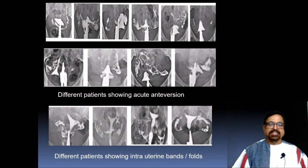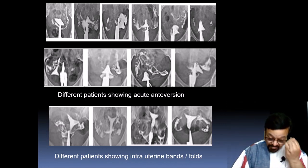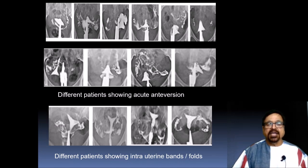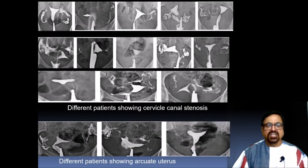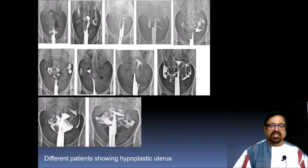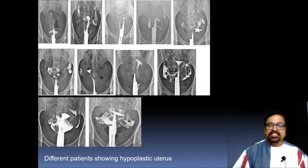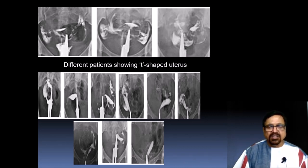We are now going to a film reading session — all images are from our own research paper. The first group shows different patients with acute anteversion. The second group shows different patients with intrauterine bands, adhesions, folds, or synechiae. Then different patients showing bicornuate uterus, different patients showing cervical canal stenosis, different patients showing arcuate uterus, different patients showing hypoplastic uterus, T-shaped uterus, and unicornuate uterus. Please go slowly through these images and try to analyze them yourself to develop diagnostic skill.